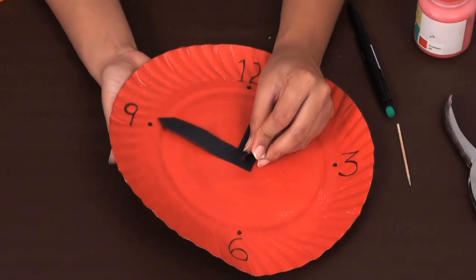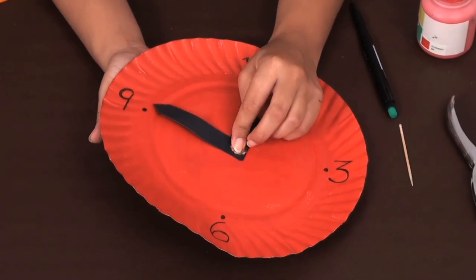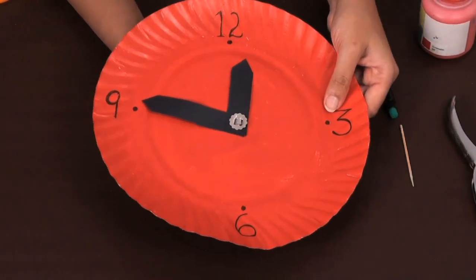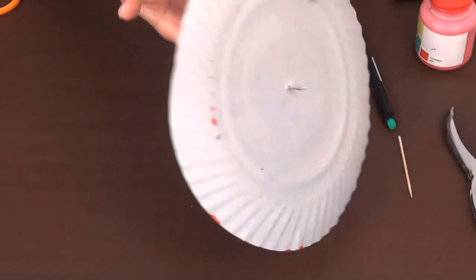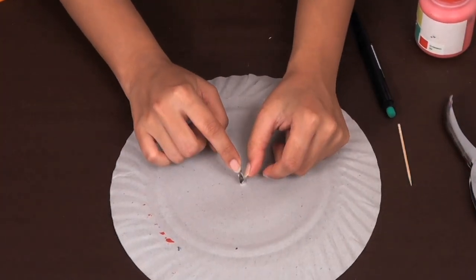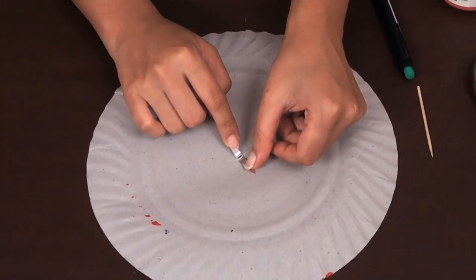When you've got the four main points, you can go ahead and fix the hands of the clock. Take the split pin, insert it through the hands, and then through the hole in the center of the plate. Turn the paper plate over and spread the split pins like this to fix the hands.